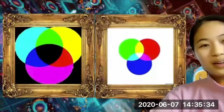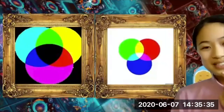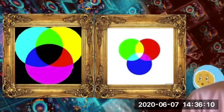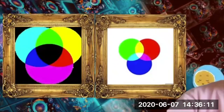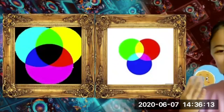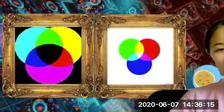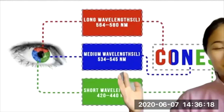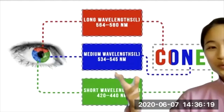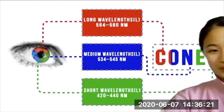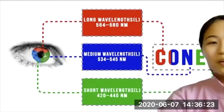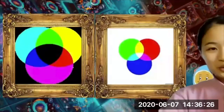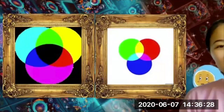Now, how can we actually see color? Humans have three color cones in their eyes, and by mixing signals from those cones, we can see all the beautiful colors around us in the world.